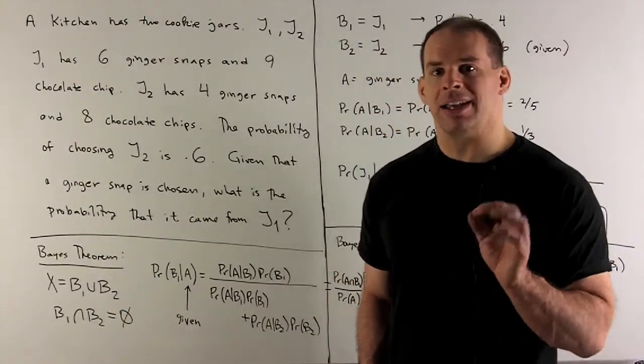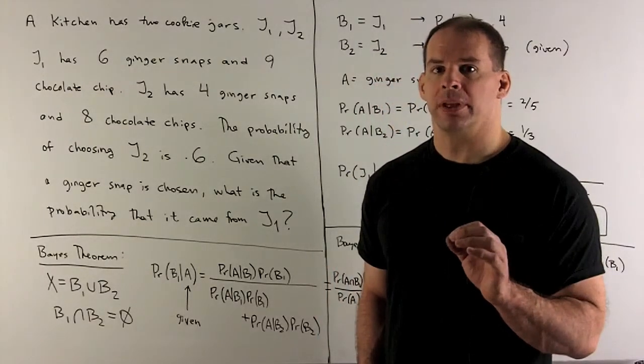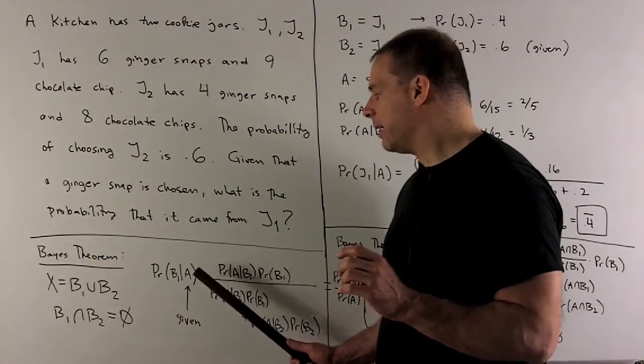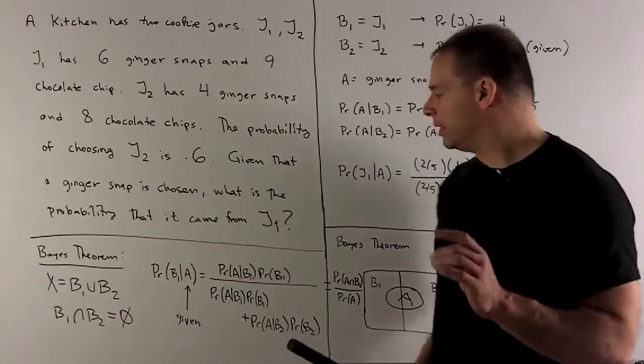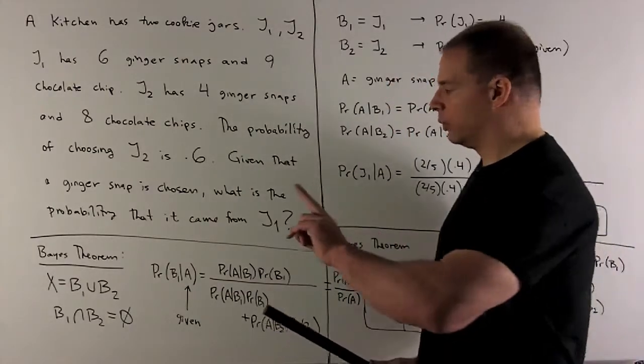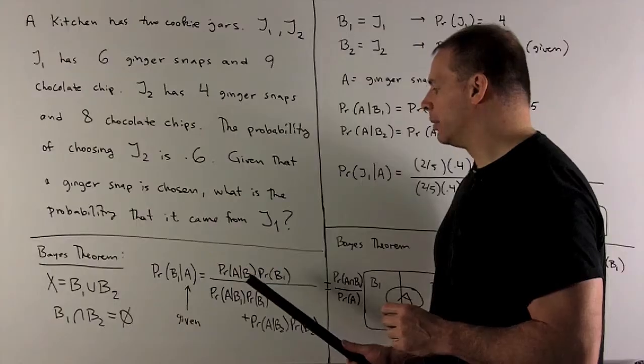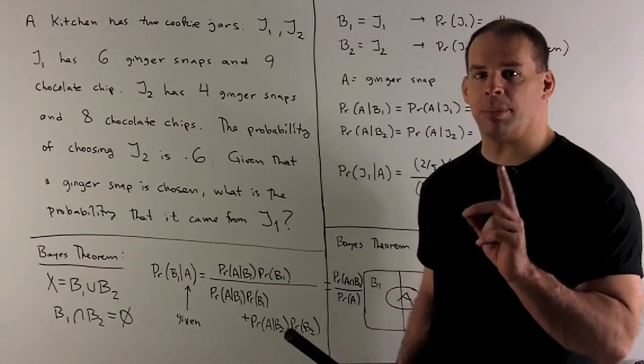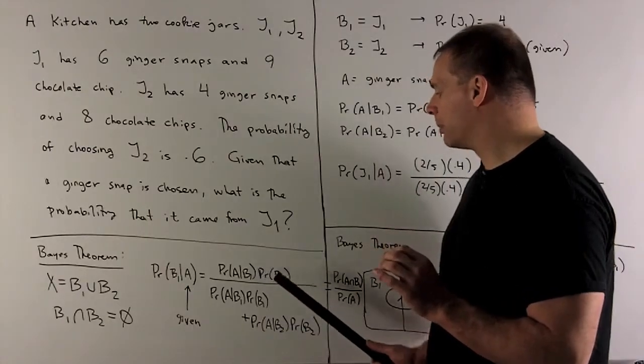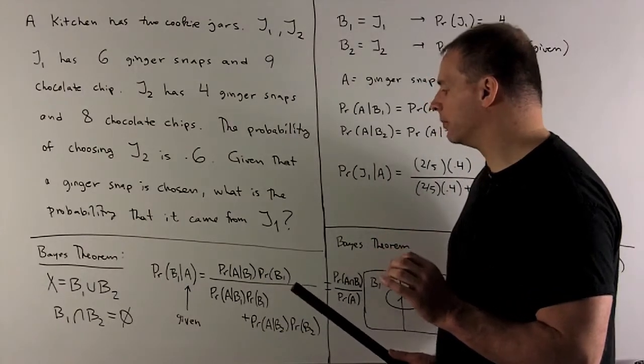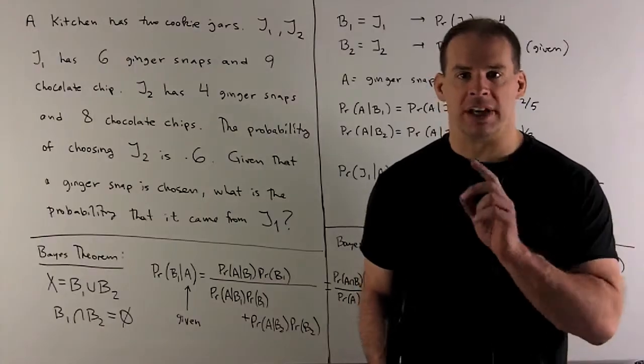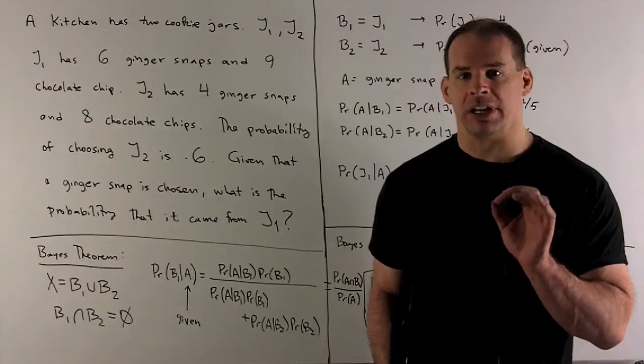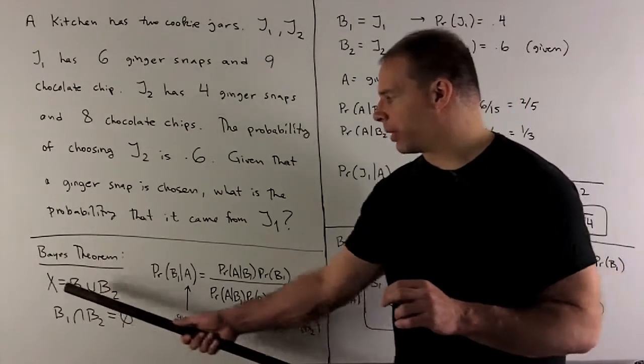Bayes' theorem is going to be a statement about conditional probabilities. So if I have conditional probability of B1 given A, it's going to be equal to the probability of A given that B1 occurs. And then I just multiply what's in the second slot, so that'll be times probability of B1. For the denominator, we write that term out again, and then we're going to add in a term like that for each B that we have in our breakdown.